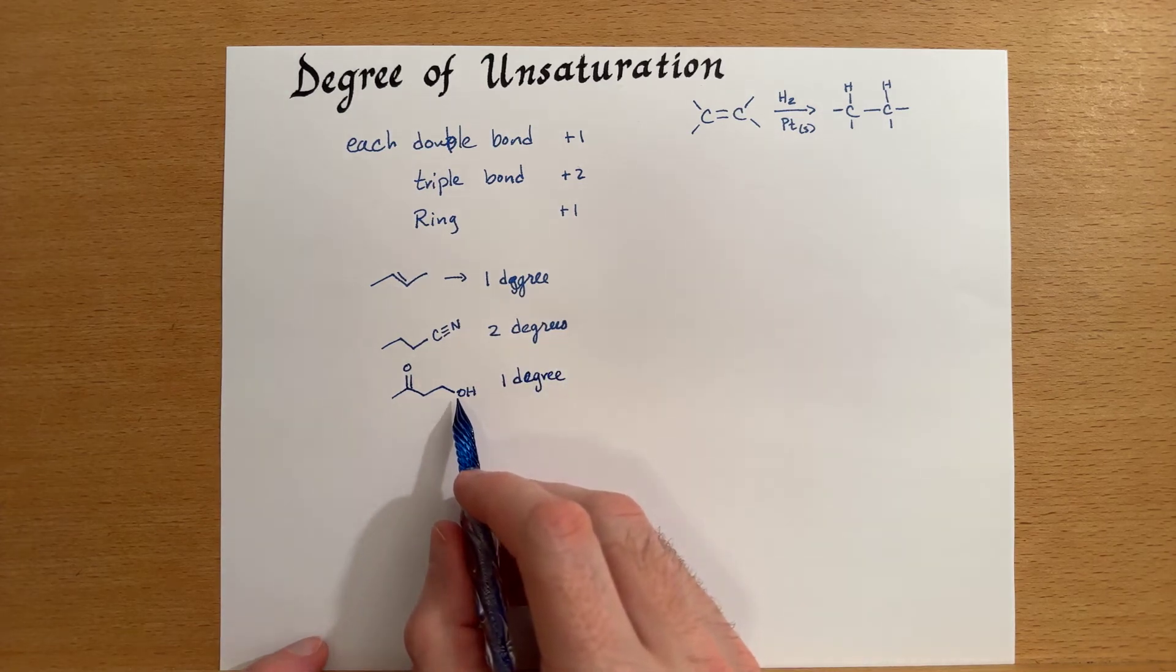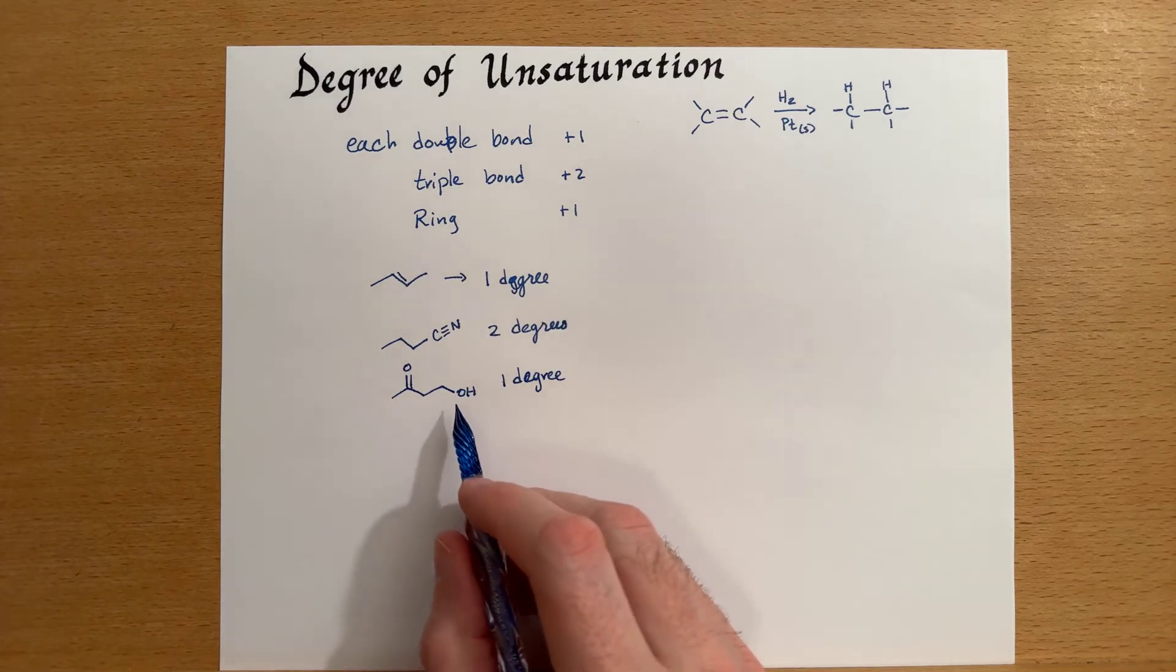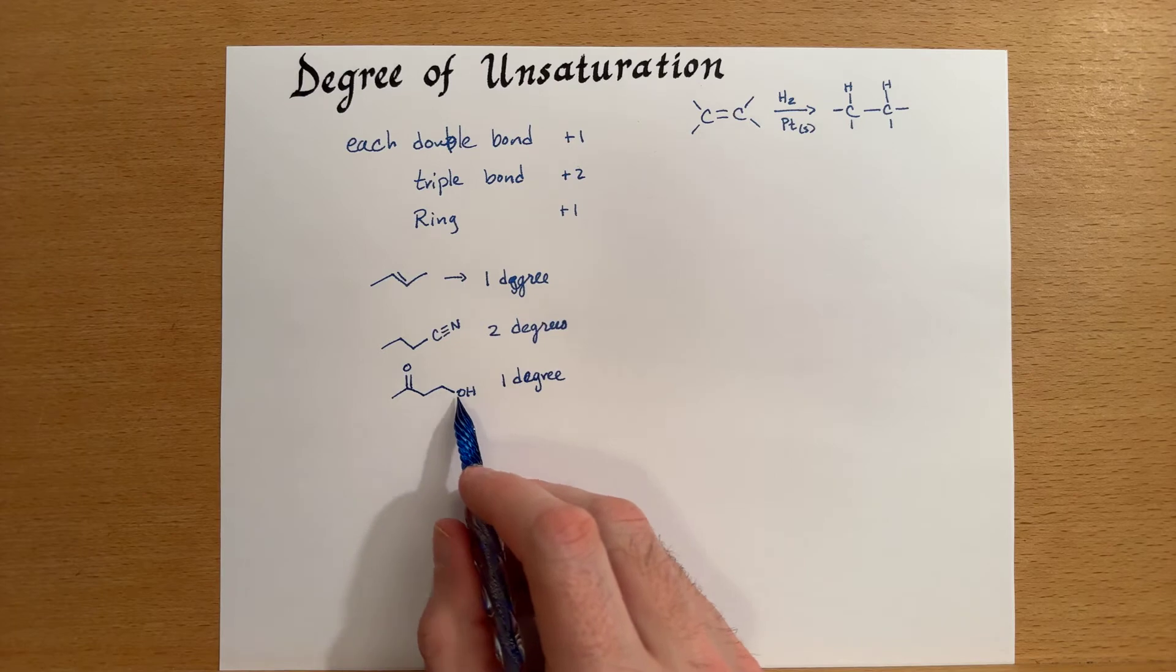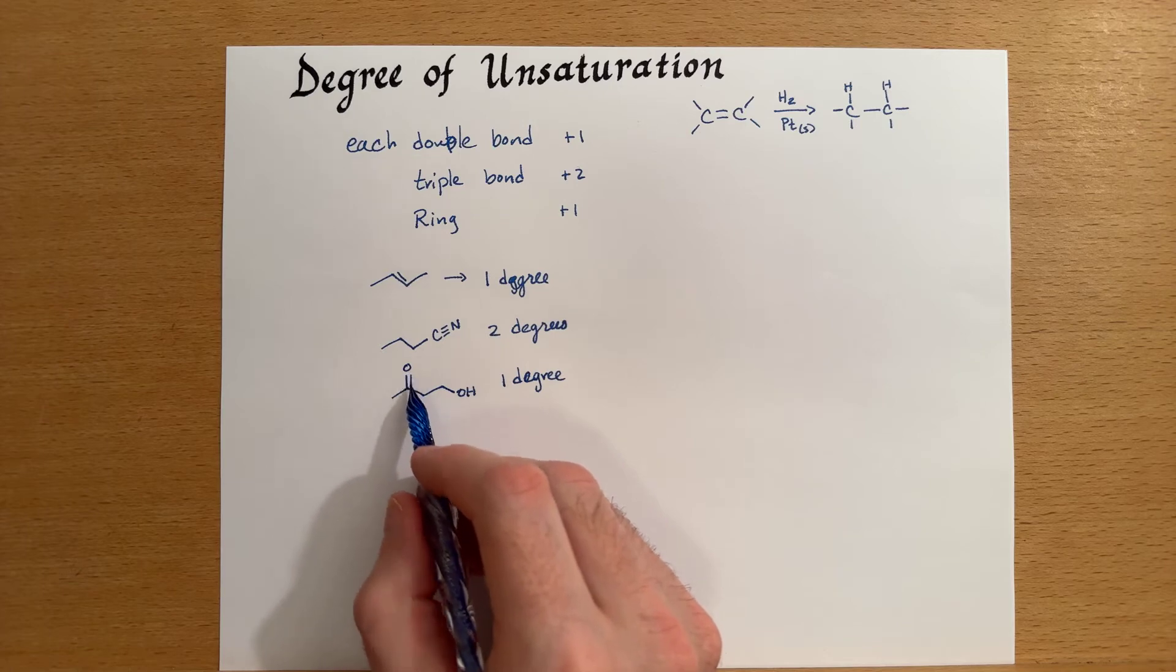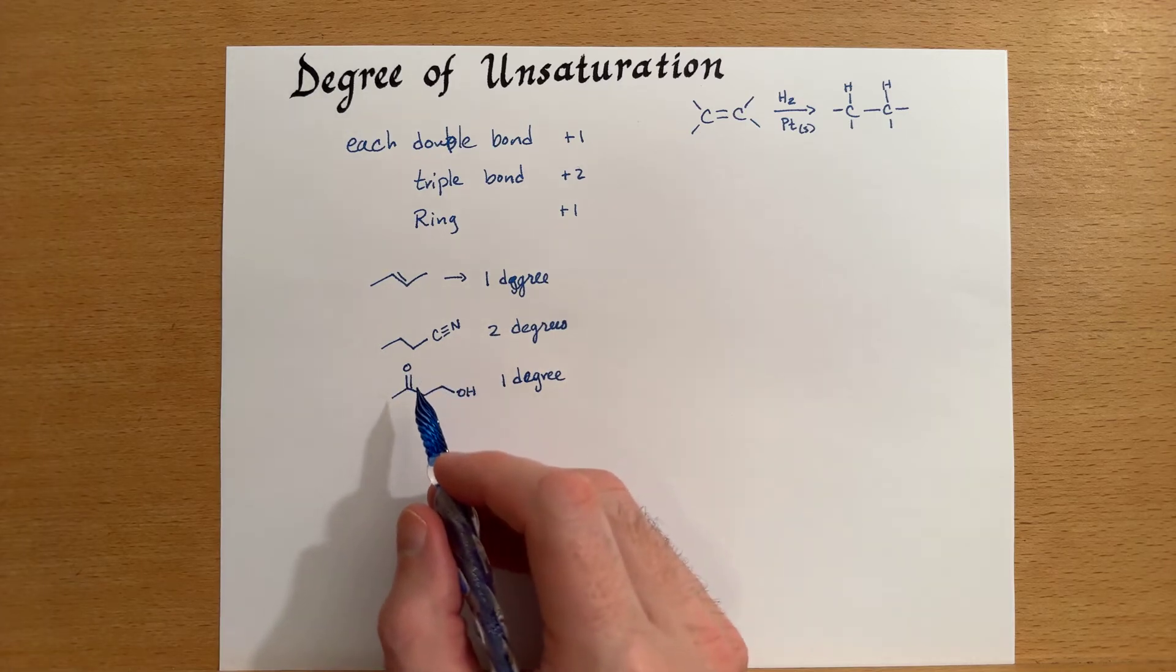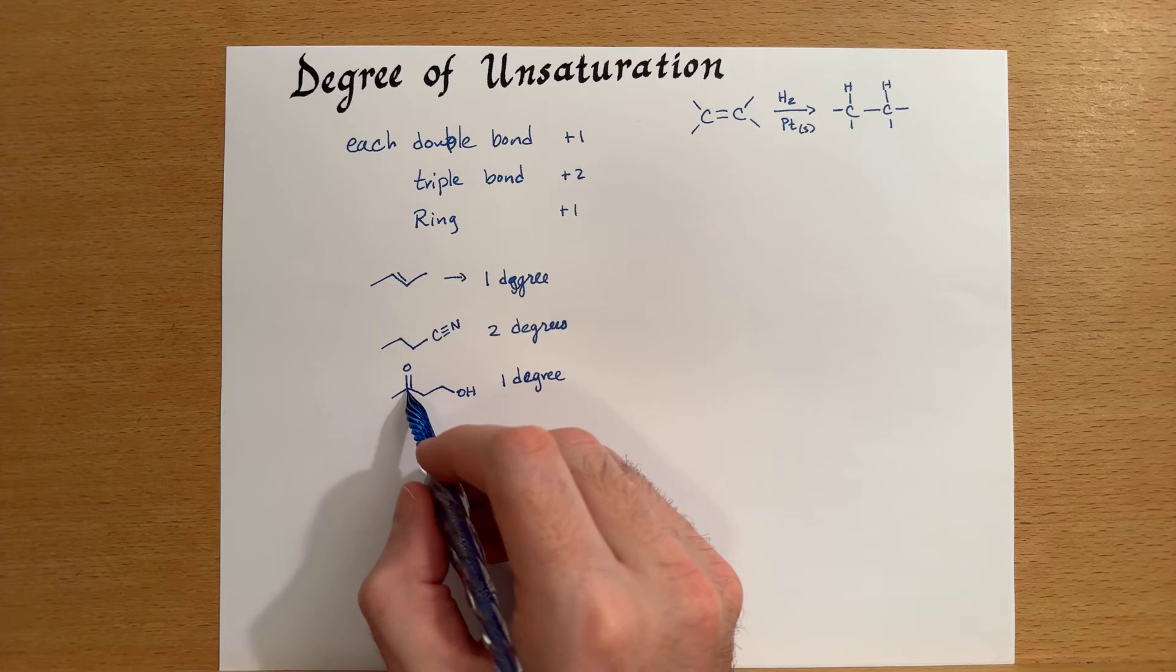You'll notice that this oxygen here is saturated. So if this were to be saturated, and there are reactions that do that, we would turn this into an alcohol. And so we would add a hydrogen at this carbon, and we'd also add a hydrogen to the oxygen.